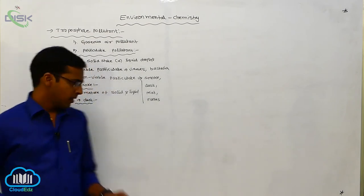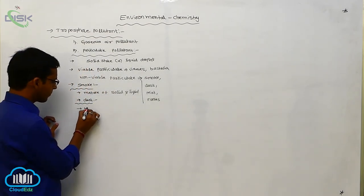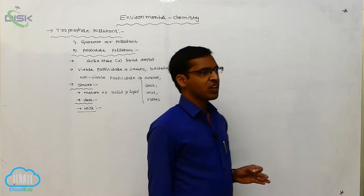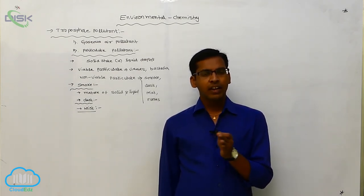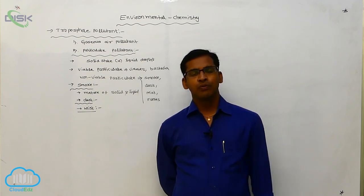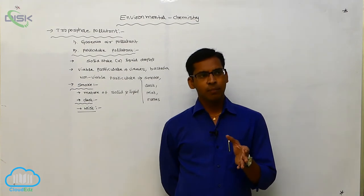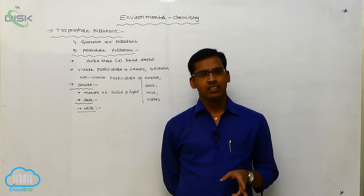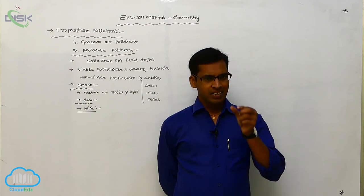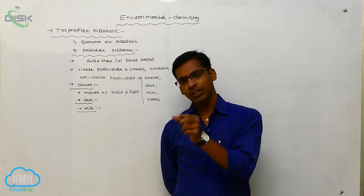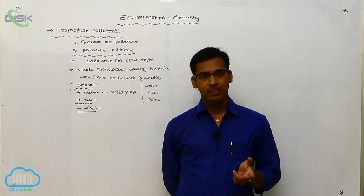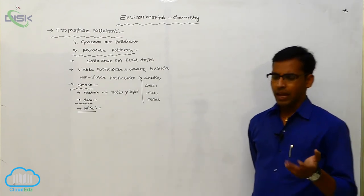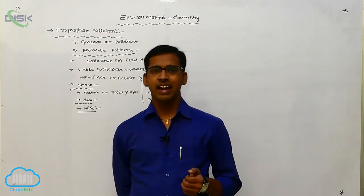Next is mist. Mist means the solid state of a particle is converted to a liquid state, and again converted to a vapor state. The vapor state of the mist reaches the target and kills them. Mist generally exists in a vapor state. Examples include herbicides, fungicides, and insecticides.